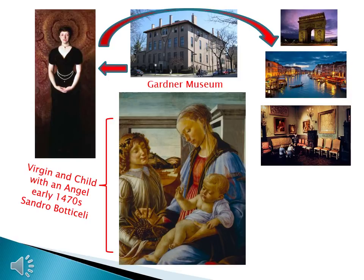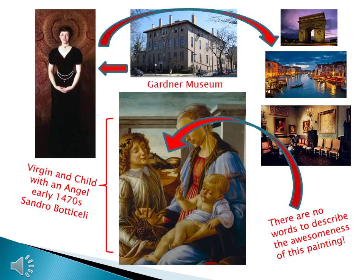Botticelli was a master of a technique called perspective. Look at that picture. Once you get past the people, how far out of that window can you look? You can look all the way into that valley, and because of this, there are no words to describe the awesomeness of this painting. This is typical of Renaissance art, and today we're going to look at the most important pieces of Renaissance art and literature, because these pieces form the foundation of modern Western art and literature.